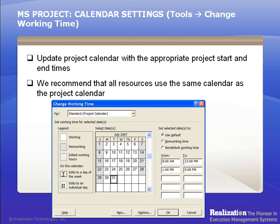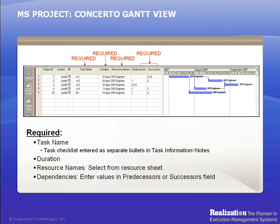Concerto also allows setting custom calendars for both project and individual resource calendars. You can specify company holidays, working hours, a resource's non-working days, or non-default working time. Concerto Critical Chain will take all calendar information into account when calculating a task's start and finish time. Now, we'll use the Concerto Gantt view in Microsoft Project to create the project network.